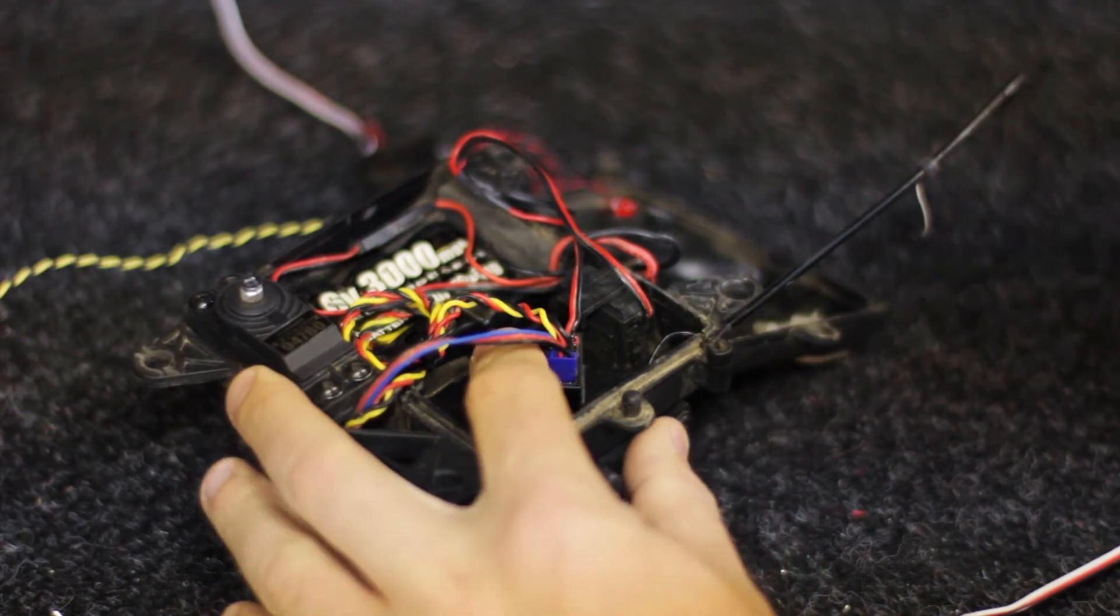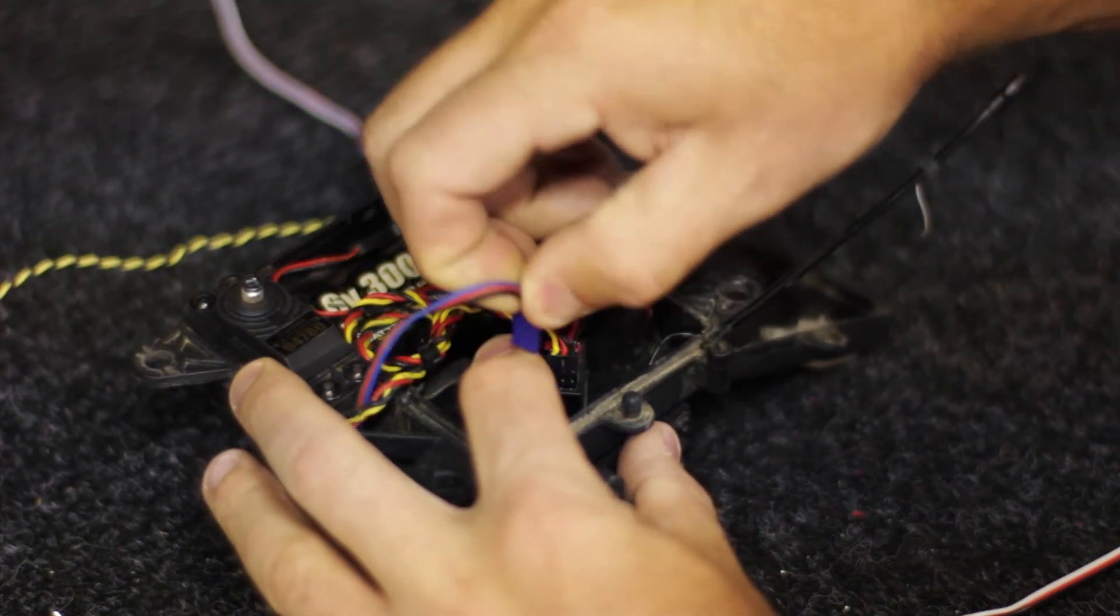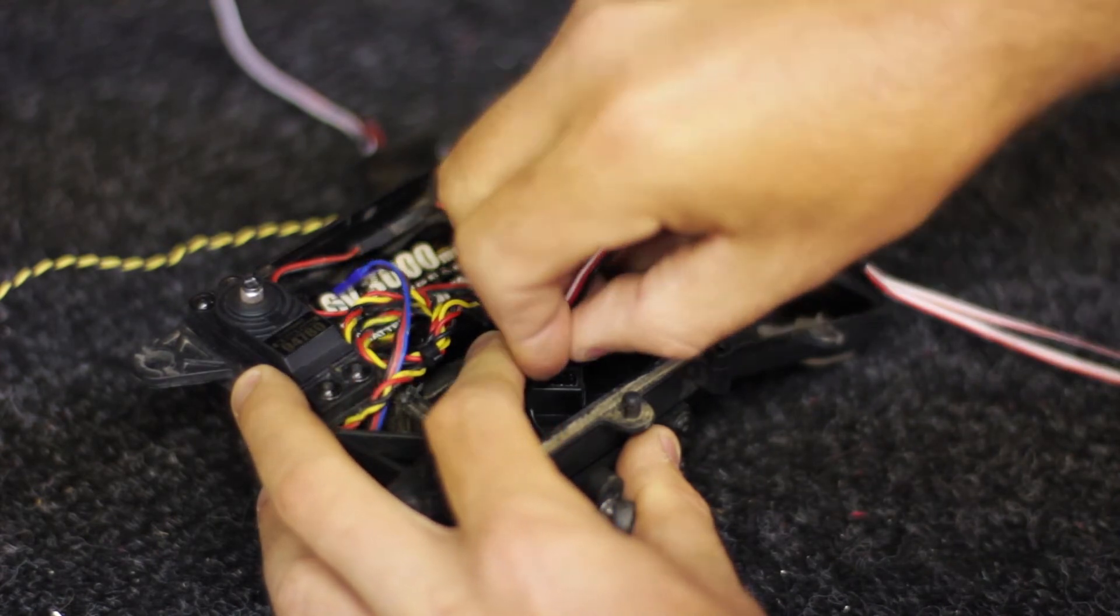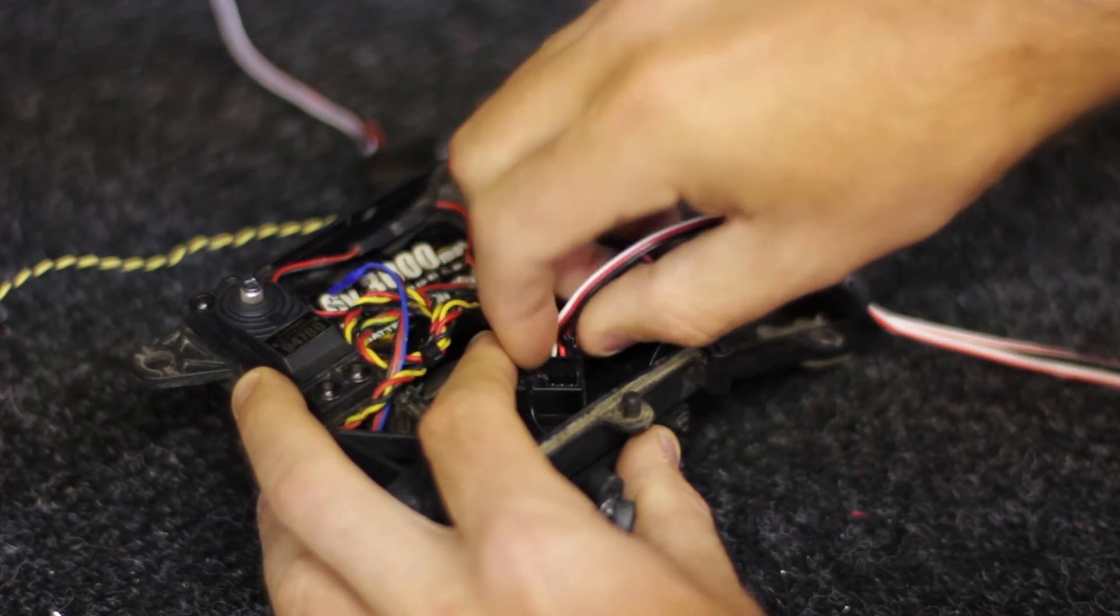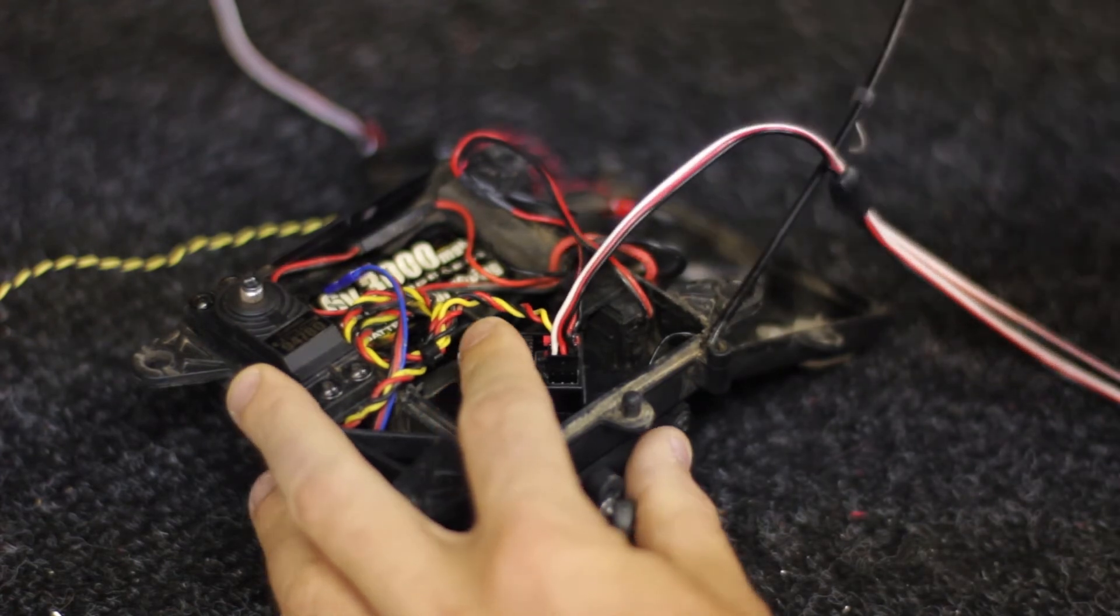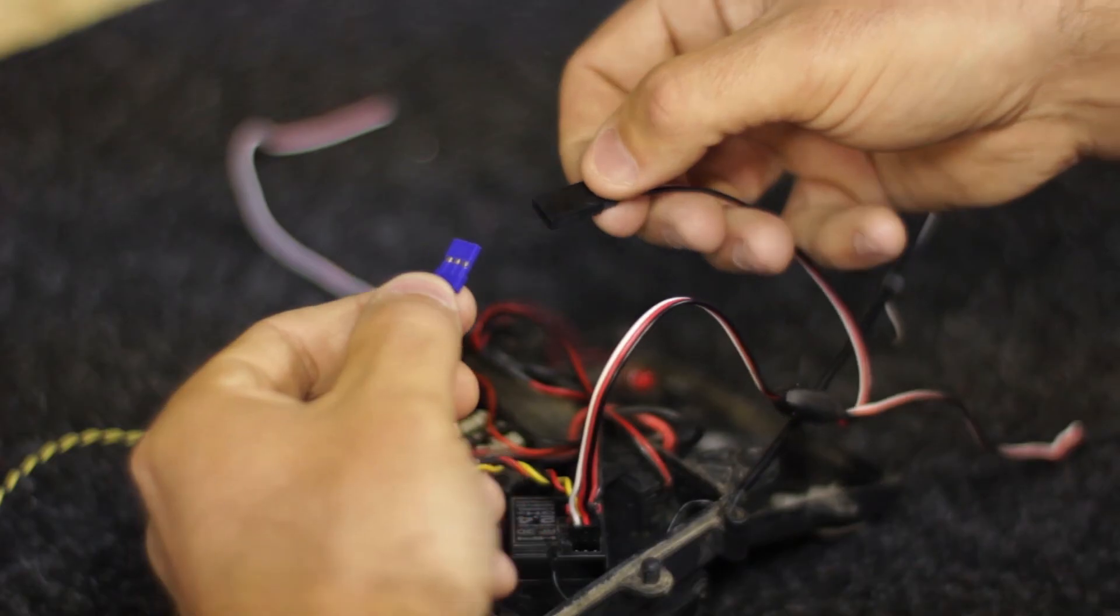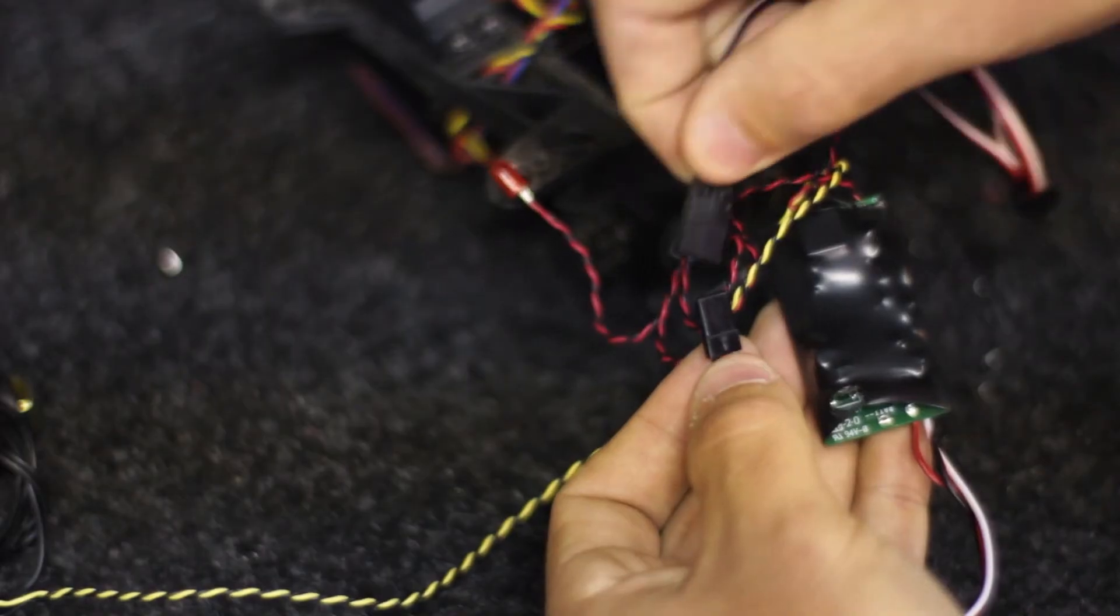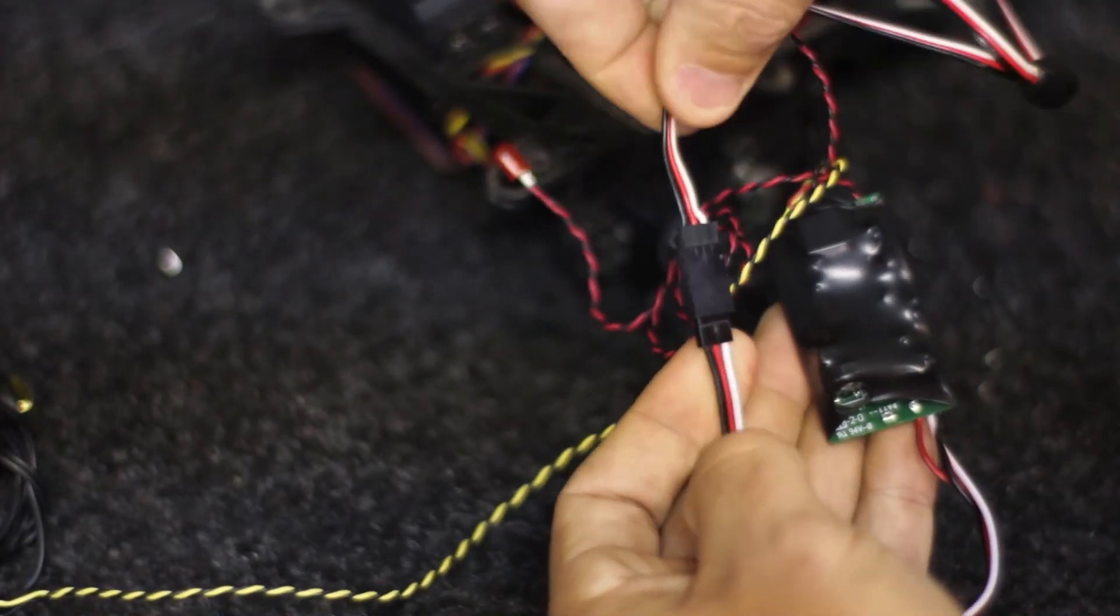So once you have the power hooked up and the nitrous oxide system hooked up, you're going to connect one end of the Y right into your receiver where the throttle servo goes. Connect the other end of the Y up to your throttle servo and then on the input of this switch there's another connector so you'd connect that right up to that.